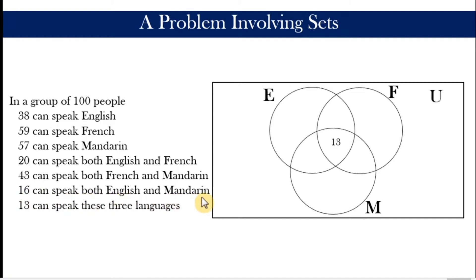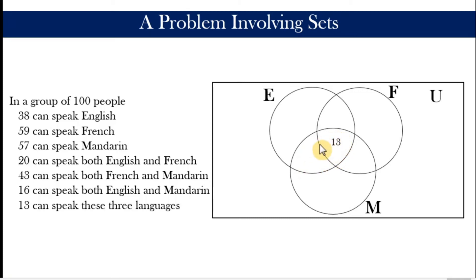Following the same reasoning, let us interpret: 16 can speak both English and Mandarin but not French. The space for people who speak English and Mandarin but not French is the E∩M region excluding the center. Since we have already accounted for 13 people in the center, we place 3 in that area so that 3 plus 13 equals 16.